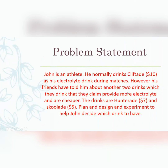Your problem statement: John is an athlete who normally drinks Clift Aid, ten dollars, as his electrolyte drink during matches. However, his friends told him about two other drinks which they claim provide more energy and are cheaper — Hunter Aid at seven dollars and School Aid at five dollars. Your job is to plan and design an experiment to help John decide which drink to take, choosing the one with the highest amount of electrolyte, hopefully on the cheaper side.